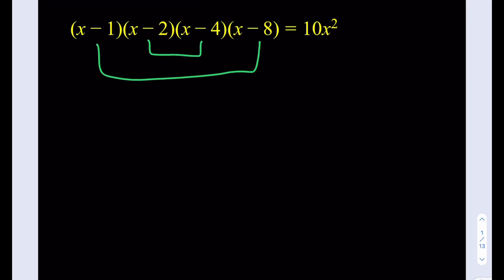So let's go ahead and multiply x minus 1 times x minus 8. That's going to give us x squared minus 9x plus 8. And if you multiply x minus 2 by x minus 4, you're going to get x squared minus 6x plus 8. And that product is going to equal 10x squared.